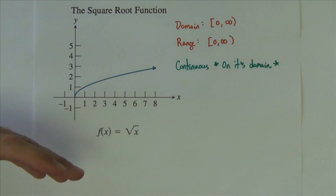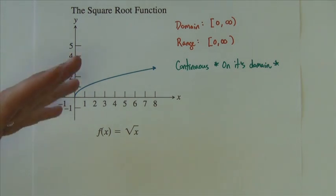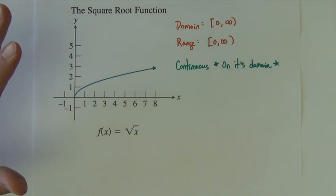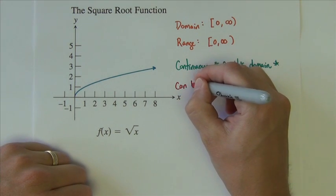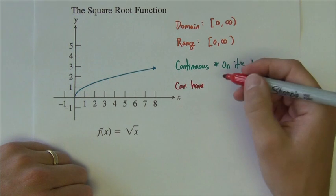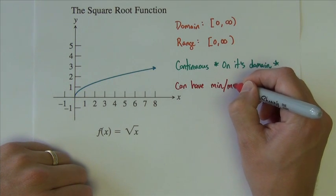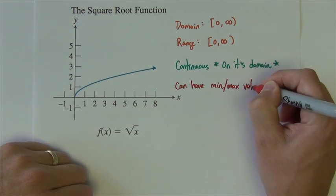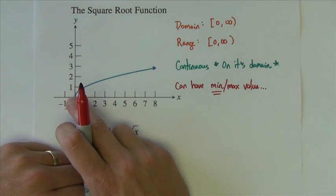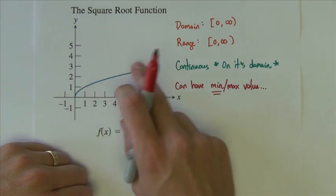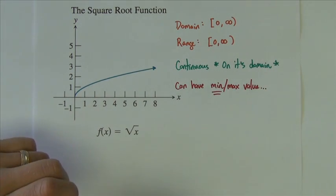It has no asymptotes, has no symmetry—it's not even or odd. This one does have, we'll just put it like this, can have, or I suppose we should say will have, a minimum or maximum value. This one has a minimum value, right here where we started. It doesn't have a max though, because it keeps going up forever.